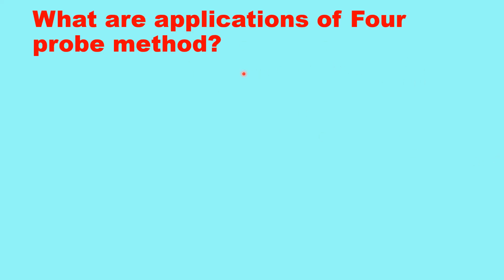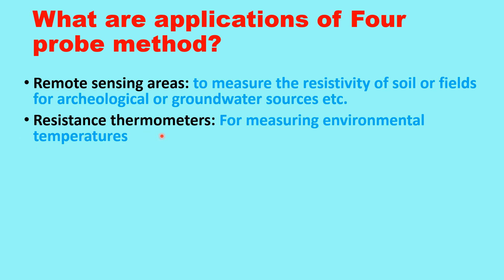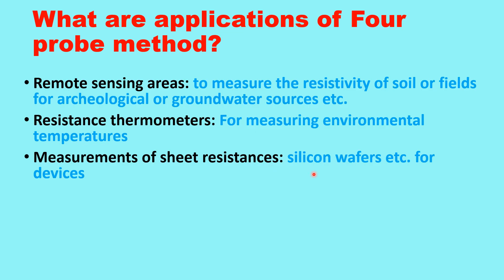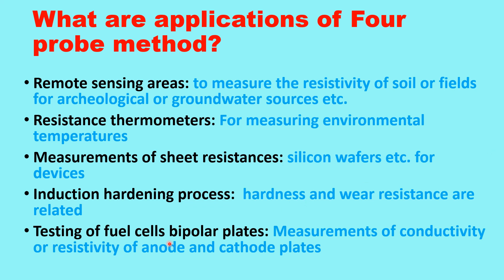What are the applications of four probe method? It is used for remote sensing to measure the resistivity of soil or fields for archaeological surveys or groundwater resources. It is used for resistance thermometers to measure environmental temperature, and for measurement of sheet resistances of silicon wafers used in devices. It is also used in hardening processes — measuring the resistance of a material can indicate its hardness. Additionally, it is used in testing fuel cells for bipolar plates, measuring resistivity of anode and cathode plates.